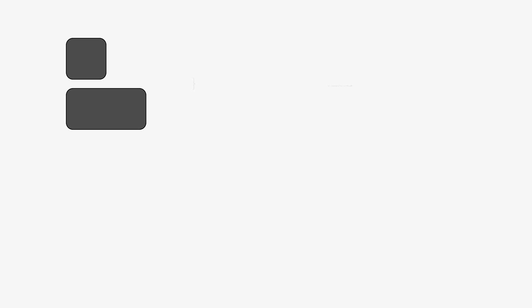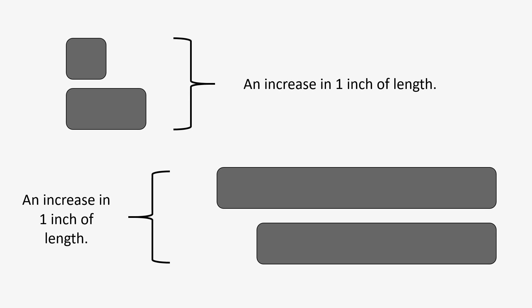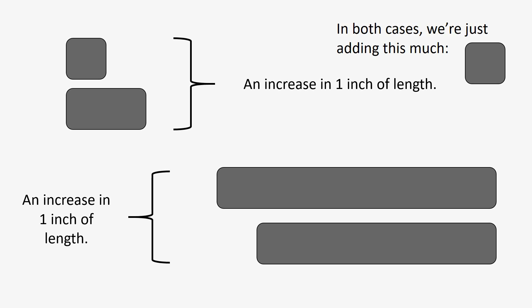For a visual example: starting with a small square and adding just one inch of length, you can detect a pretty big difference — effectively the square has doubled. But starting with two larger rectangles and adding that same one inch, they don't look nearly as different. In both cases we're only adding the same amount, but we detect it much more easily when starting with the smaller, shorter shapes.